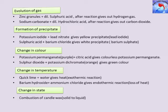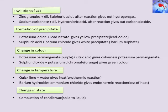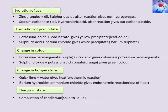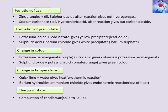Evolution of a gas: some chemical reactions are characterized by the evolution of gas. For example, when zinc granules react with dilute sulfuric acid, bubbles of hydrogen gas are produced. The chemical reaction between zinc and sulfuric acid is characterized by the evolution of hydrogen gas. The chemical reaction between sodium carbonate and dilute hydrochloric acid is characterized by the evolution of carbon dioxide gas.